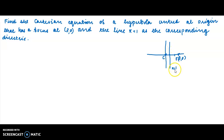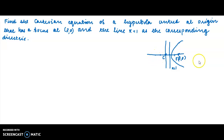This is the right part of the hyperbola. Similarly, there is a symmetric part: directrix x = -1 and focus at (-3, 0) on the other side. The hyperbola has its center at the origin, its axis along the x-axis, and the focus at (3, 0) lies on the x-axis. This is the right part of the hyperbola.